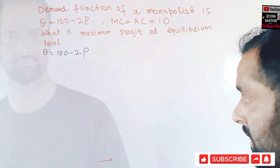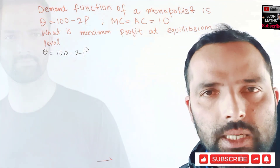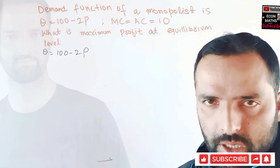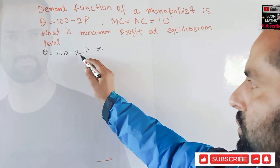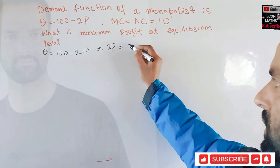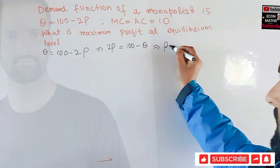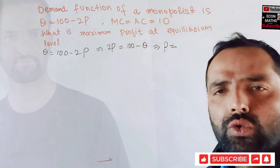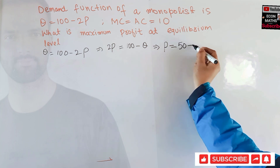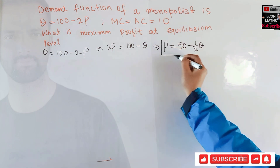The first step in finding the equilibrium level of output and price is to find the inverse demand function. By inverse demand function, we mean we have to solve the given demand function in terms of price. We transpose 2P: 100 minus Q, then solving for P gives us P is equal to 50 minus one-half Q. This is our inverse demand function.